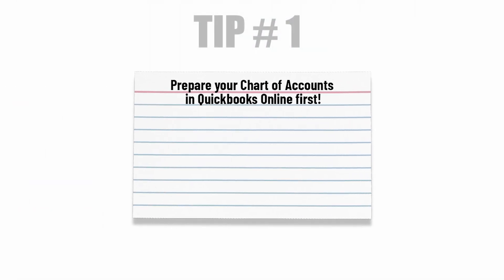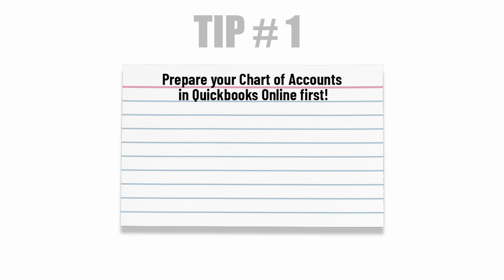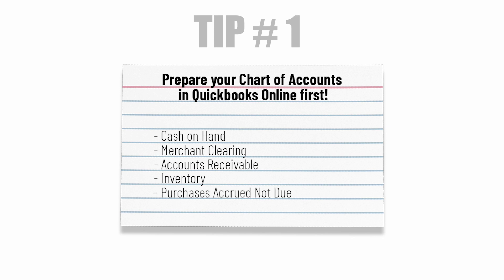Tip number 1: Before activating the integration, and so that you can easily compare the accounts from one system to another, we recommend you create the following 5 GL accounts in QuickBooks Online: Cash on Hand – for tracking cash and check transactions; Merchant Clearing – for tracking credit card and electronic transactions; Accounts Receivable – a current asset account for customer activity; Inventory – a current asset account for tracking inventory; and Purchases Accrued – Not Due – a current liability account for tracking purchases.